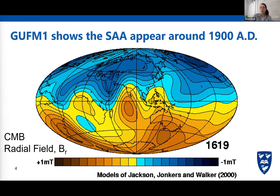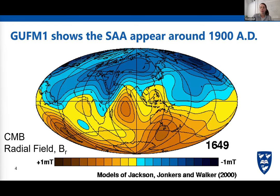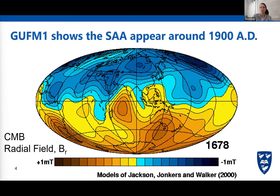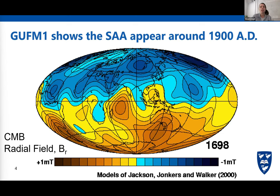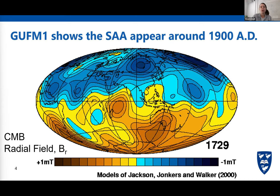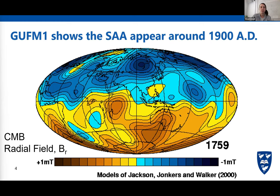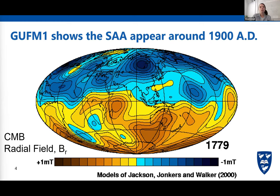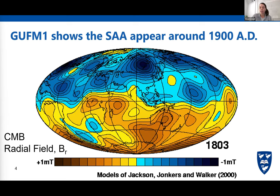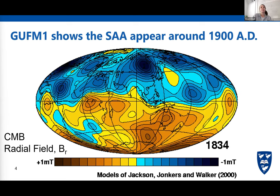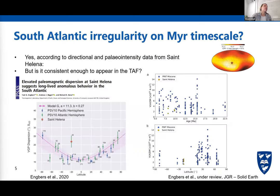This means that the current feature of the magnetic field has not been a continuous part of our geomagnetic field. The question is whether it has been a recurring feature or just a one-off feature of today's field — which could even lead to a reversal, as has been suggested by some scientists. To test if the South Atlantic anomaly is a recurring feature, we went to St. Helena to test the South Atlantic field from about 10 million years ago.